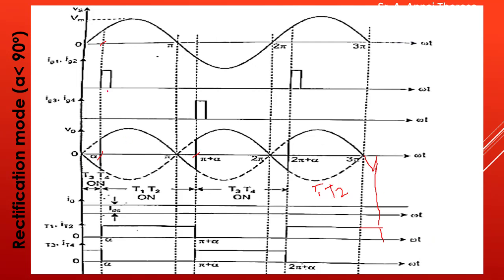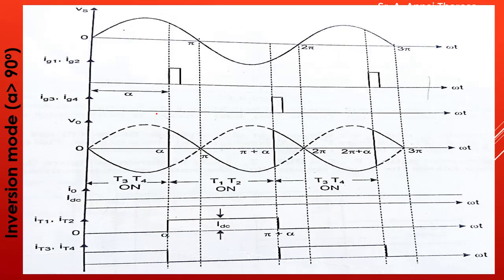We are triggering the thyristors at alpha less than 90 degrees — it may be 30 degrees. Since the thyristors are triggered at less than 90 degrees, the converter is working in rectification mode, that is, it acts as a rectifier. The next mode of operation is inversion mode, where the triggering angle is greater than 90 degrees, so the converter works as an inverter.